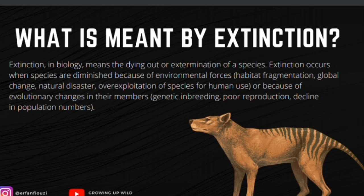What is meant by extinction? Extinction in biology means the dying out or extermination of a species. Extinction occurs when species are diminished because of environmental forces such as habitat fragmentation, global change, natural disasters, over-exploitation of species for human use, or because of evolutionary changes in their members such as genetic inbreeding, poor reproduction, and decline in population numbers.